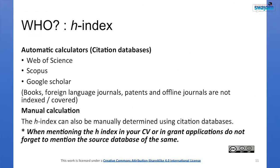Who determines the H-index? There are three main databases: Scopus, Web of Science, and most commonly Google Scholar. These are automatic citation calculators. However, in these databases, books, foreign language journals, patents, and offline journals are not indexed or covered. The H-index can also be manually determined using citation databases, but you need not calculate it manually.